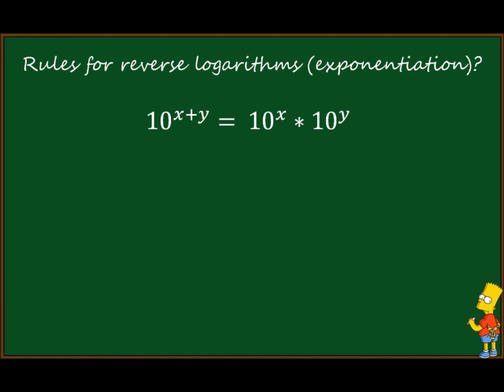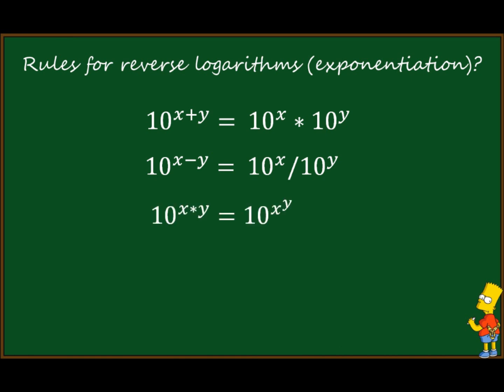The first rule is that a sum of exponents can be written as a product with the same base. Similarly, a difference becomes a ratio, and a product can be written as a power. You can remember that each mathematical operation becomes one degree higher: summing on the left side is multiplication on the right side. Note that you can never add on the right side because sum and difference are the lowest mathematical operation, but that won't be a problem.